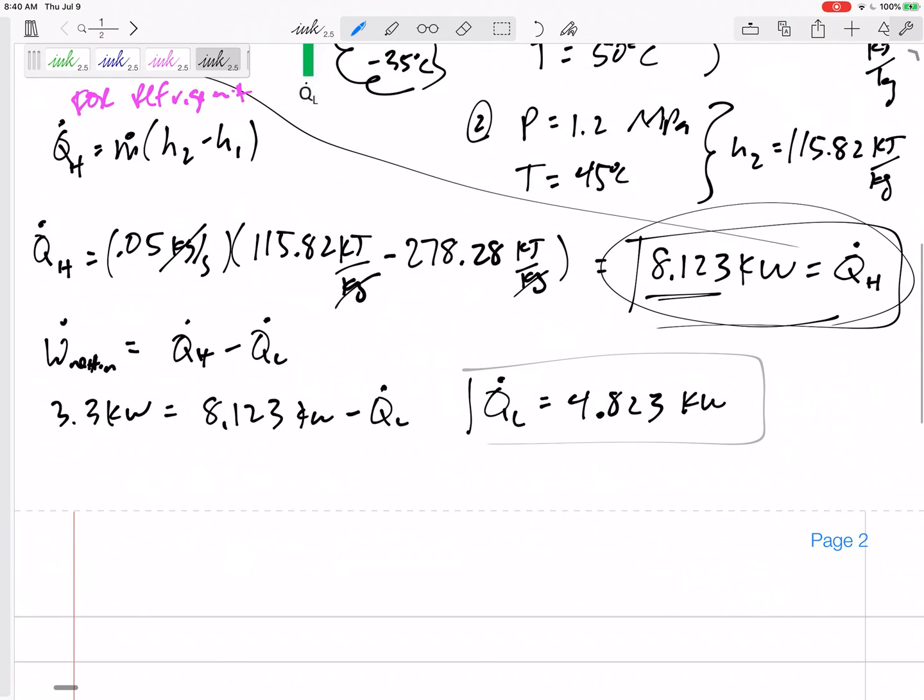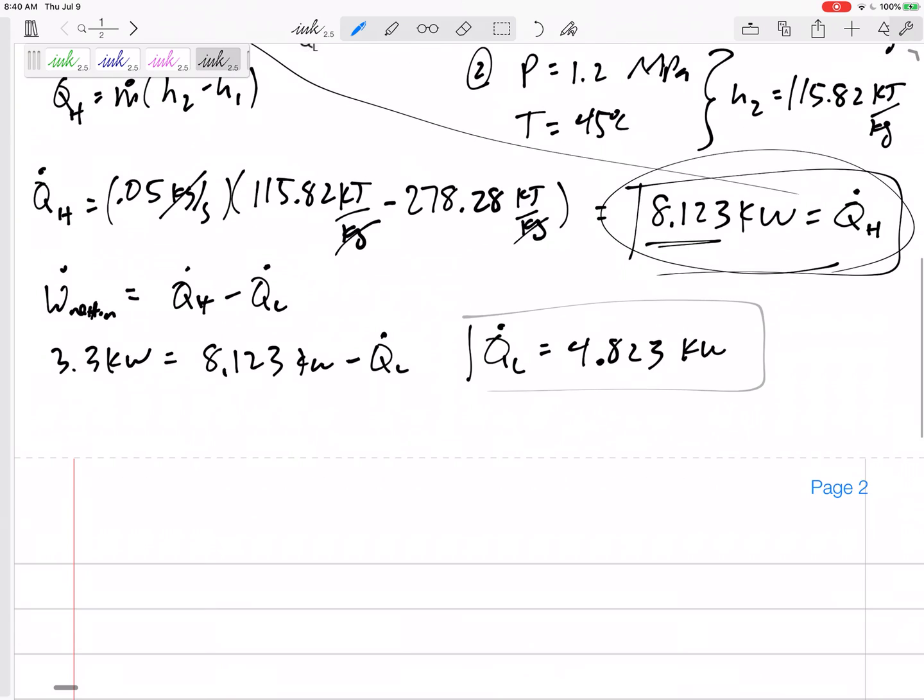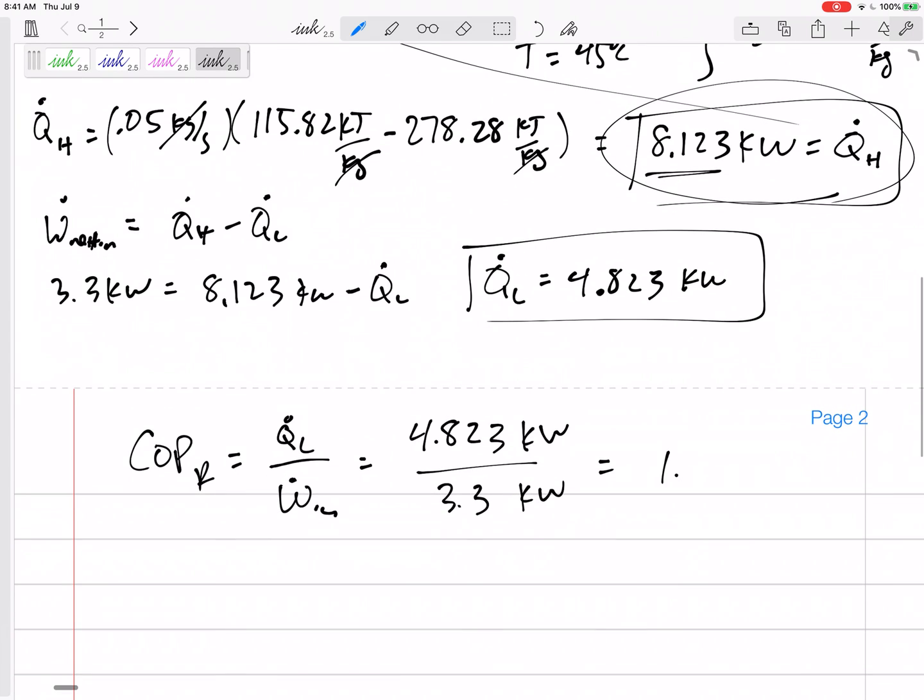And then the coefficient of performance. Now be careful when you're writing equations on your formula sheet. Don't get coefficient of performance of the refrigerator mixed up with coefficient of performance of a heat pump. Coefficient of performance of a refrigerator, I've got a couple of equations. I'm going to use this one. QL over Win. This is going to be 4.823 over 3.3. Coefficient of performance is unitless. This would be 1.6.